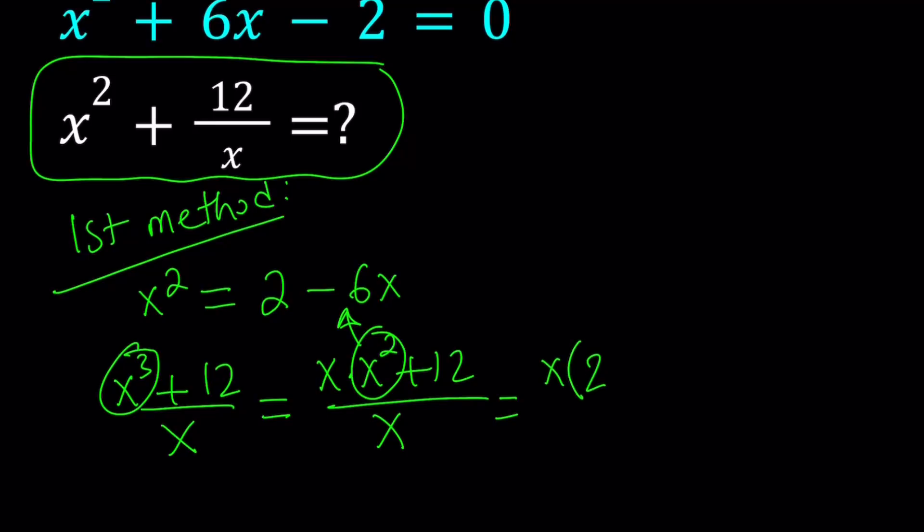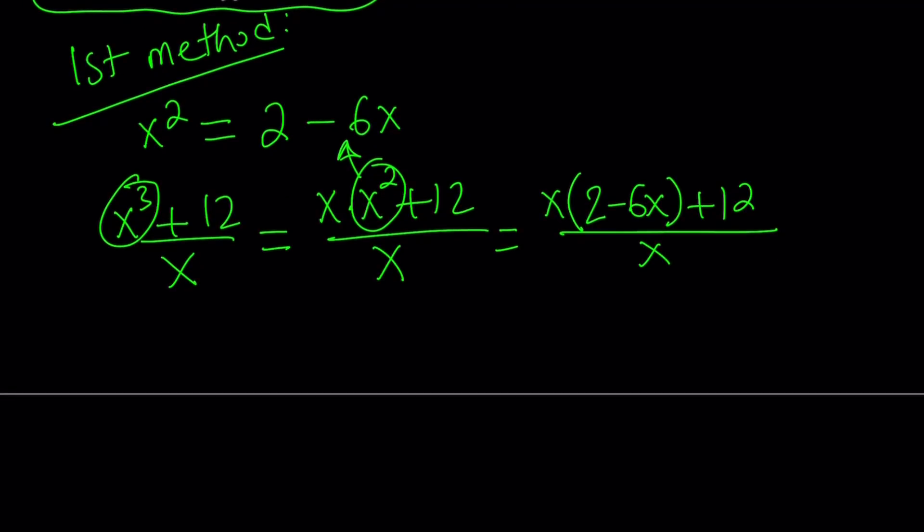And that's going to give us x times 2 minus 6x plus 12 and divide by x. Now we're going to distribute that. It's going to give us 2x minus 6x squared plus 12 divided by x.